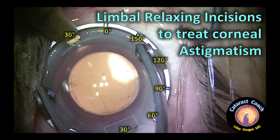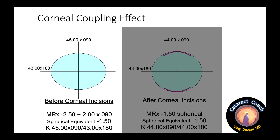cataractcoach.com — limbal relaxed incisions to treat corneal astigmatism. This is the coupling effect. On the left, before, the patient has two diopters of corneal astigmatism: 45 diopters of power at 90 degrees and opposite 43 diopters. That's a difference of two diopters of astigmatism.